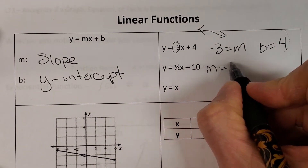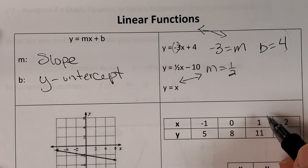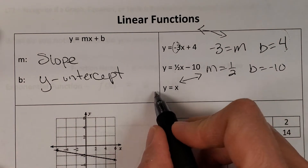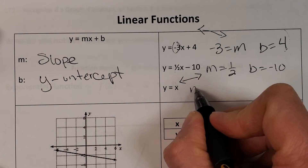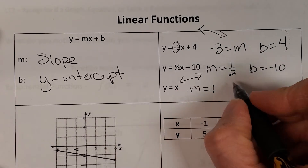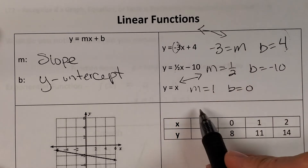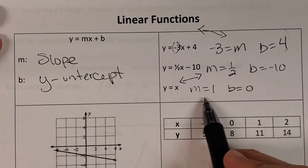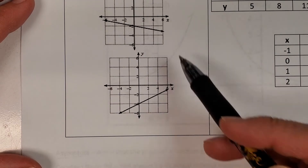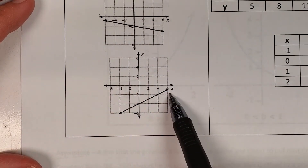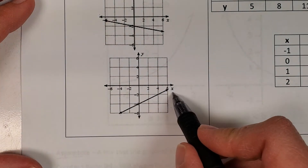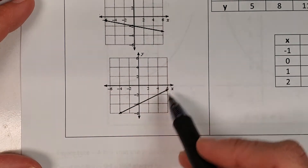Here we have a slope of one half, so it's positive and going up. Our y-intercept is negative ten. And this is a basic kind where you don't see any numbers — if there's no number in front of x, it has to be a one, and if there's no number added or subtracted, it would be zero. You should be able to recognize a linear function from a graph because it's a straight line — one going down means negative slope, one going up means positive slope.